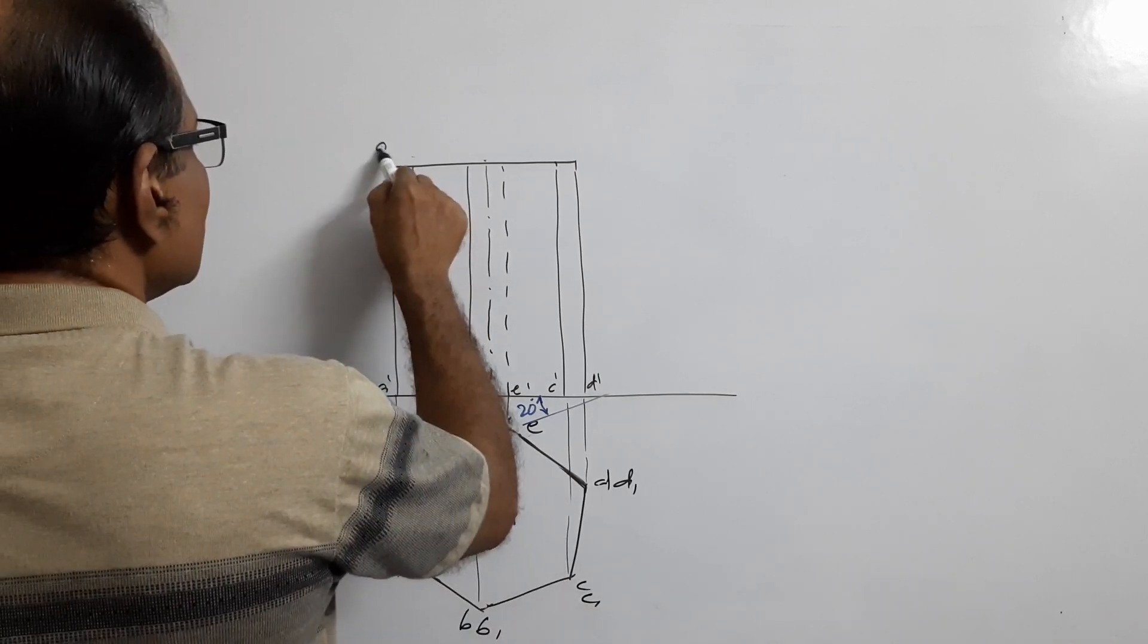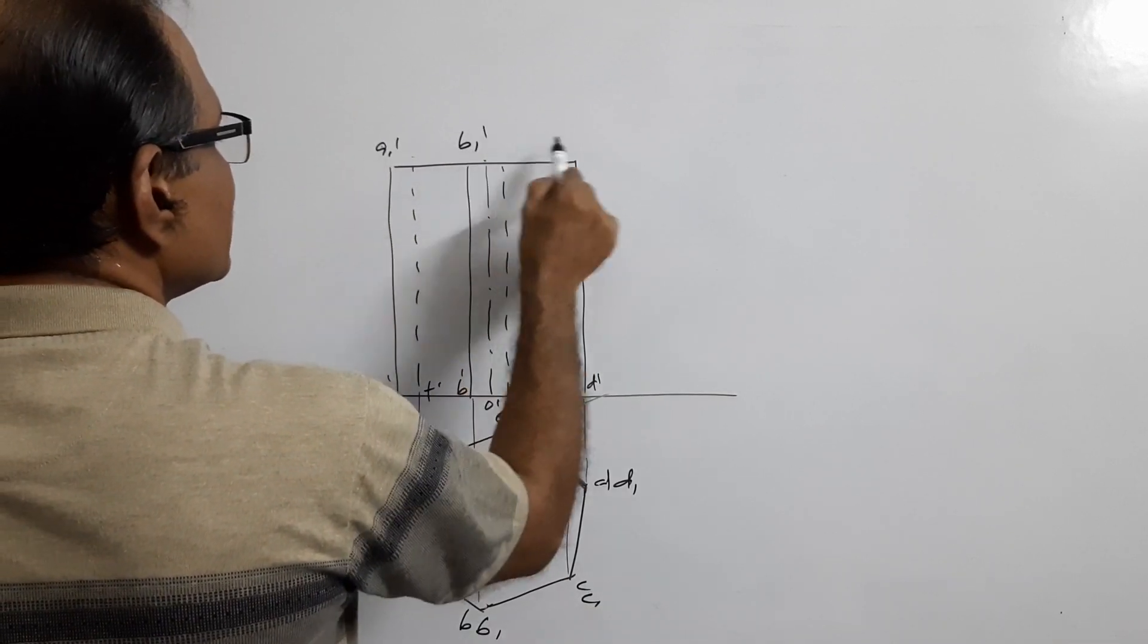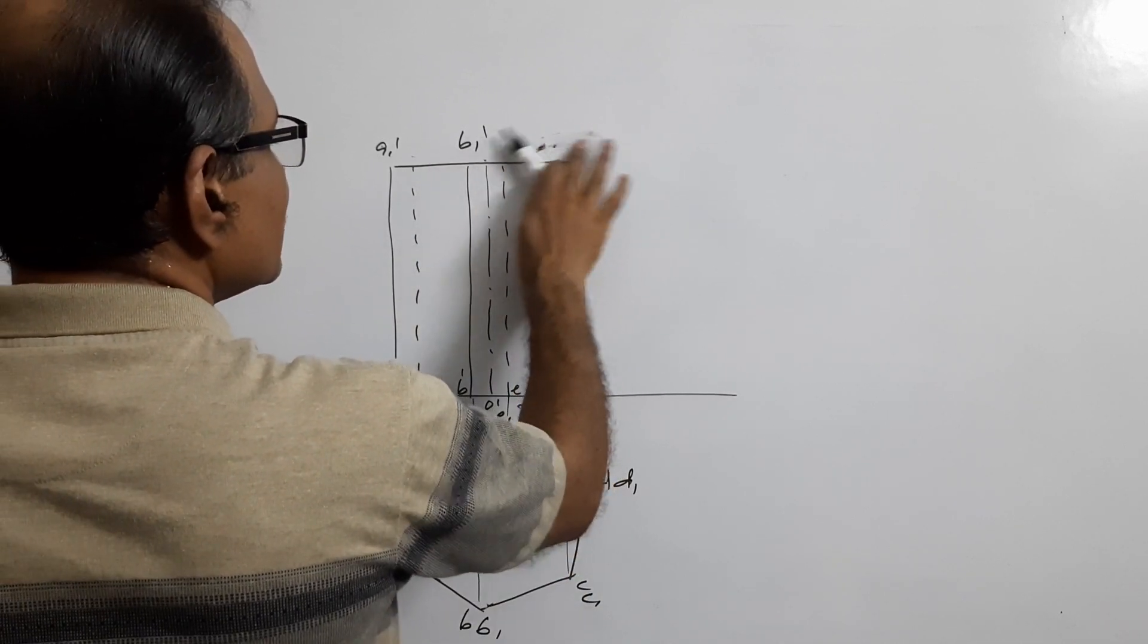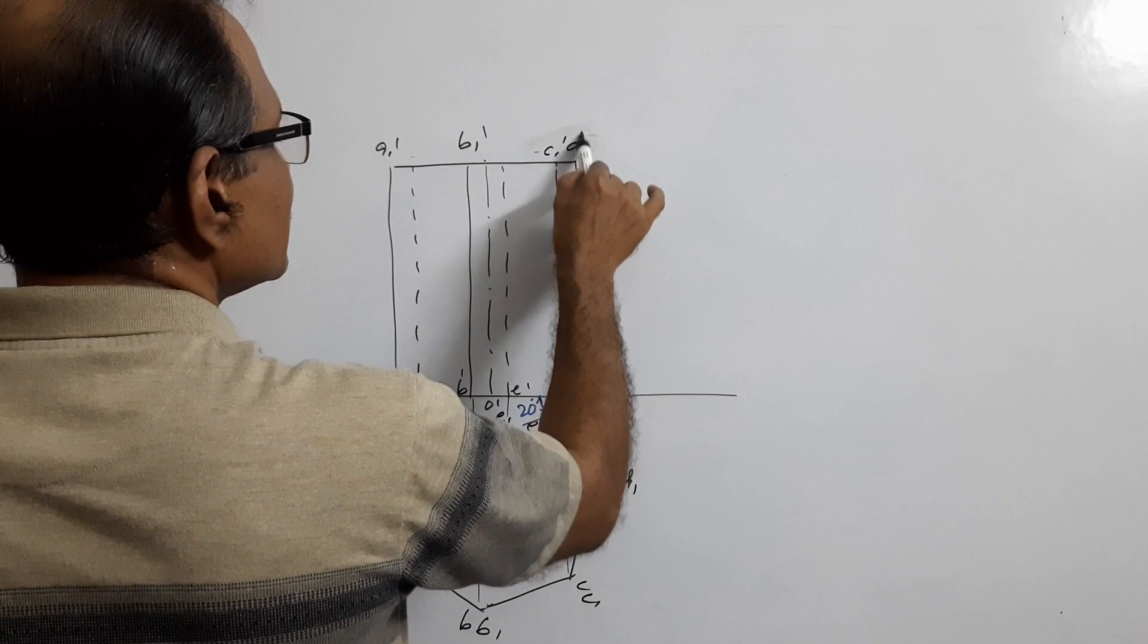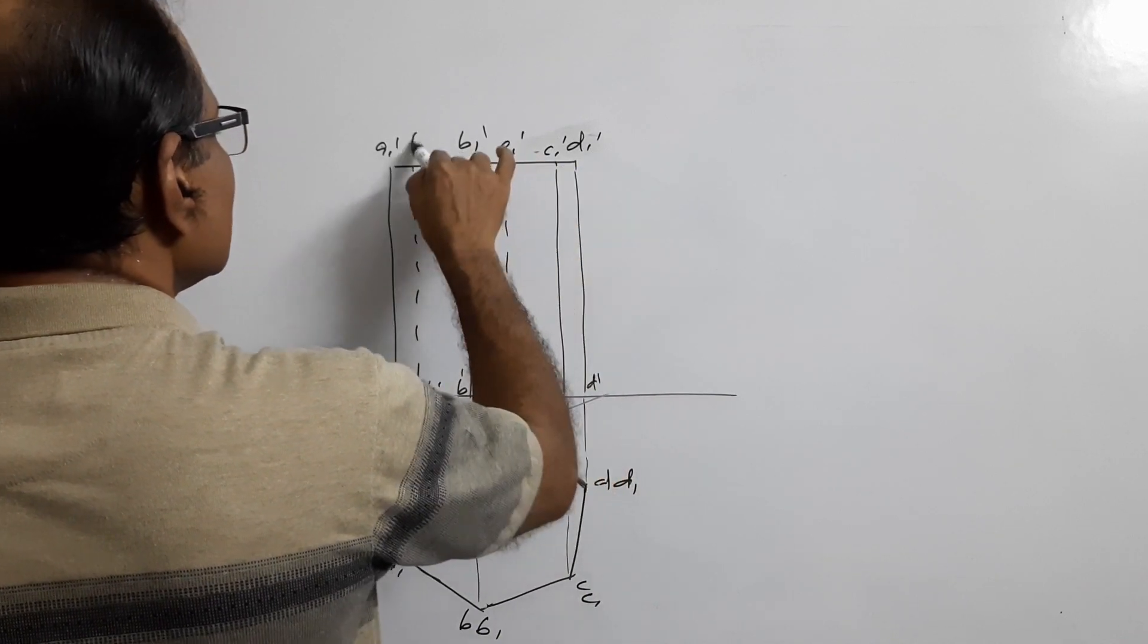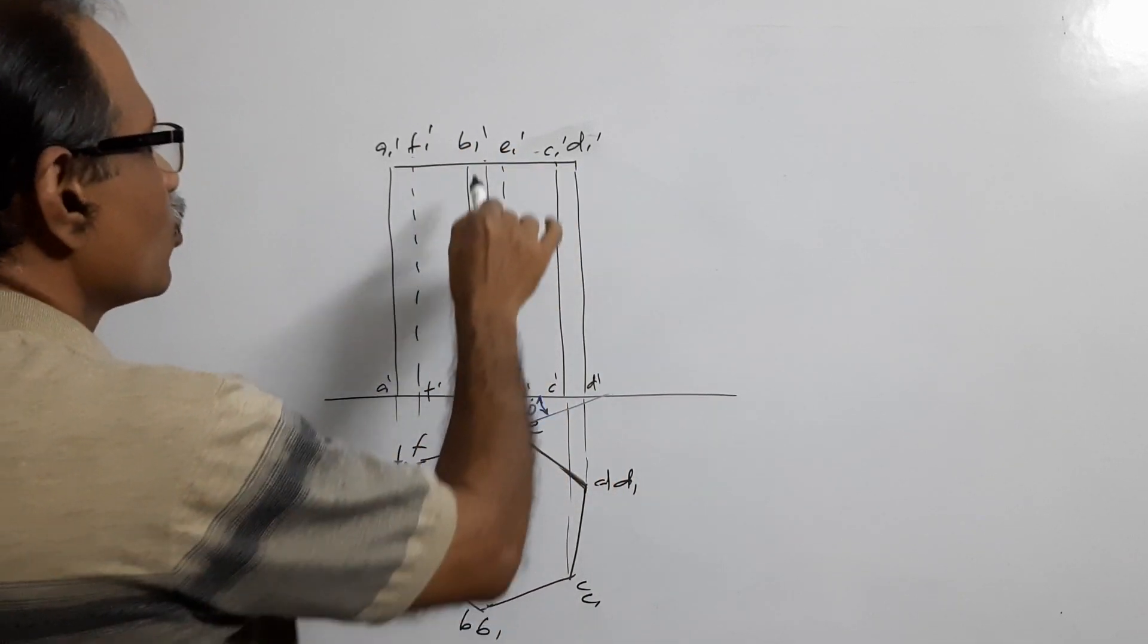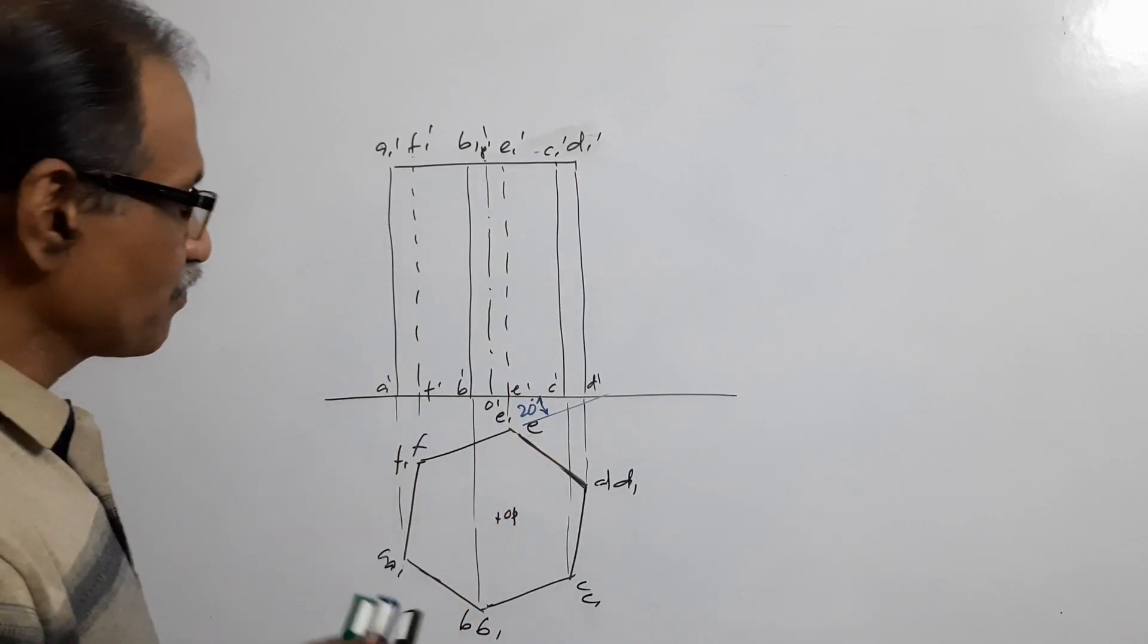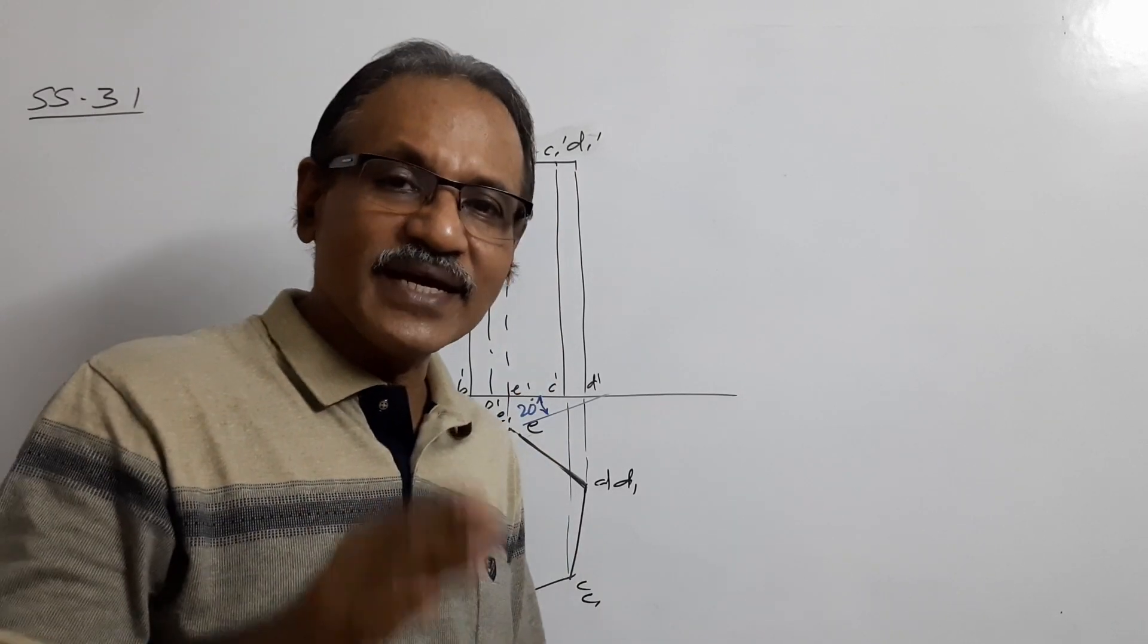Mark points on top and bottom of the hole. O dash P dash is the axis in elevation, OP is the axis in plan. Assume for the time being it is made of solid material.